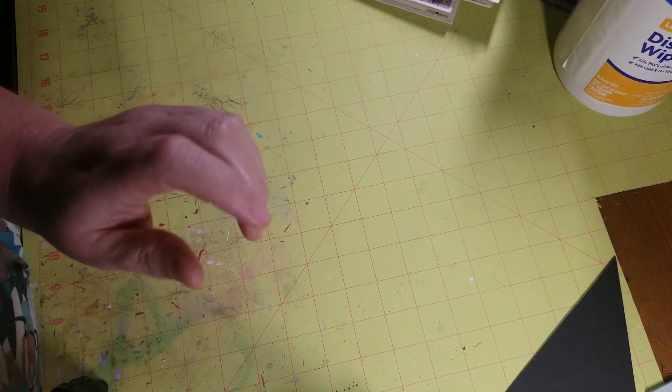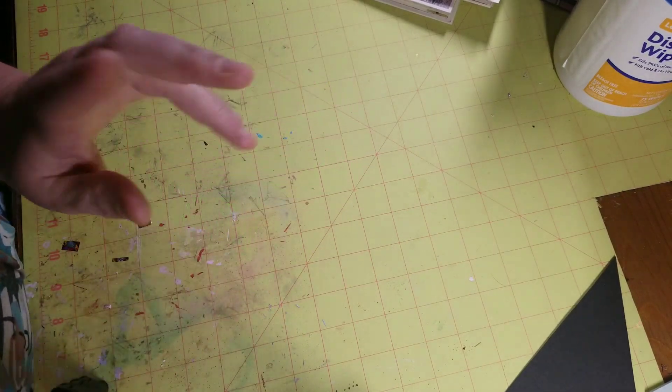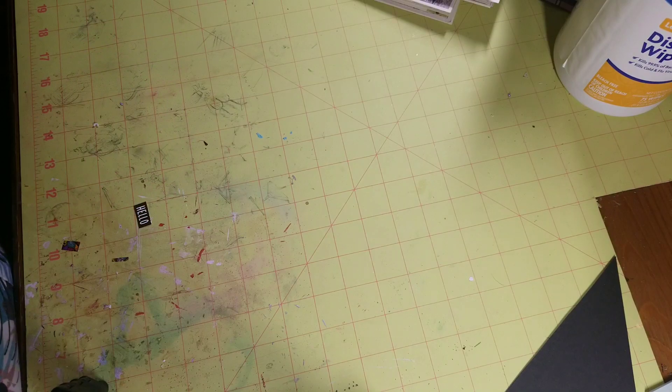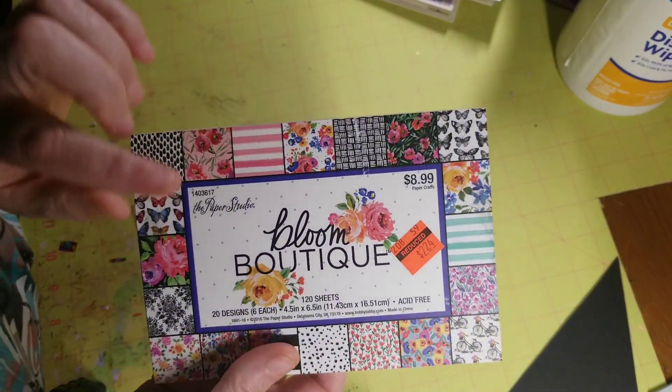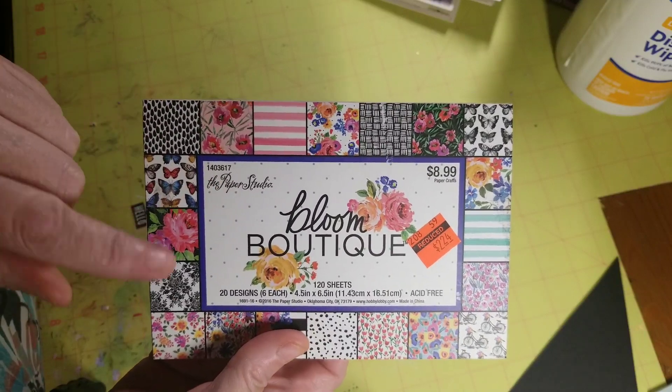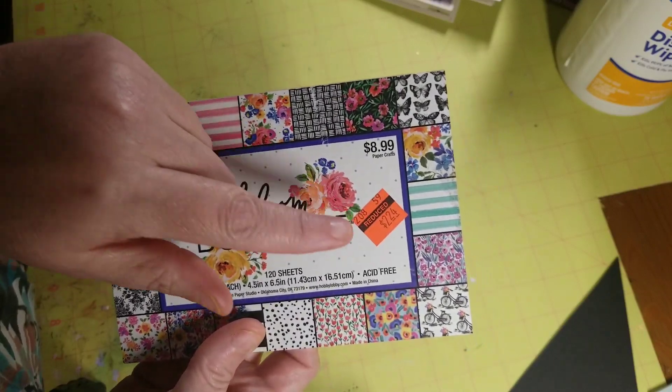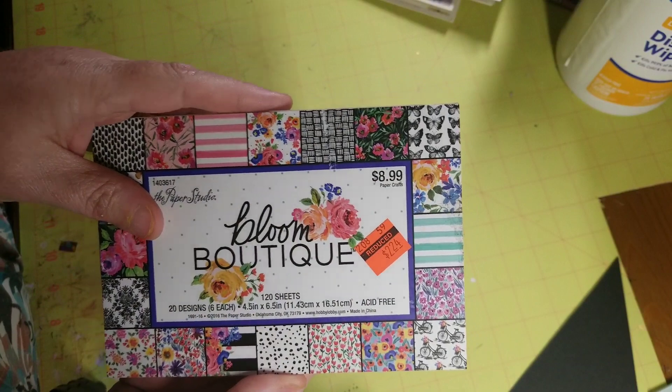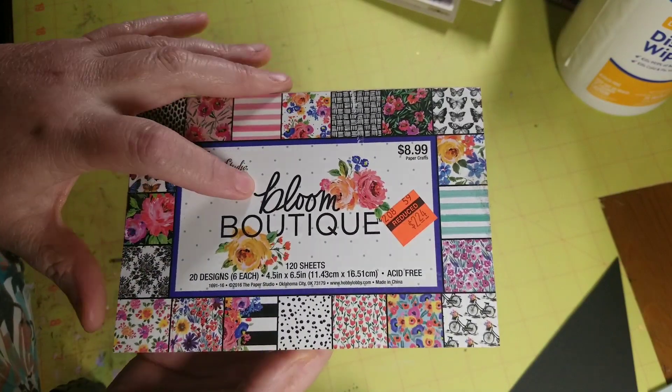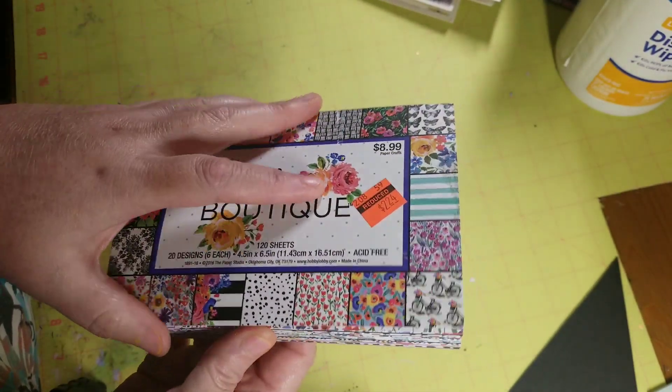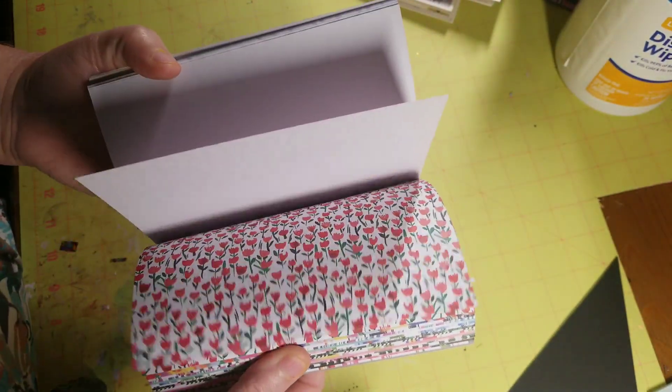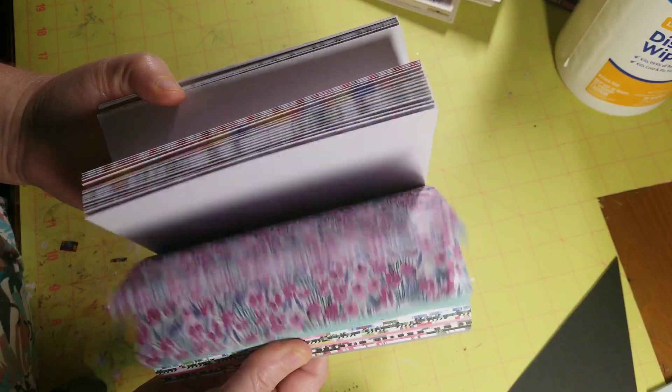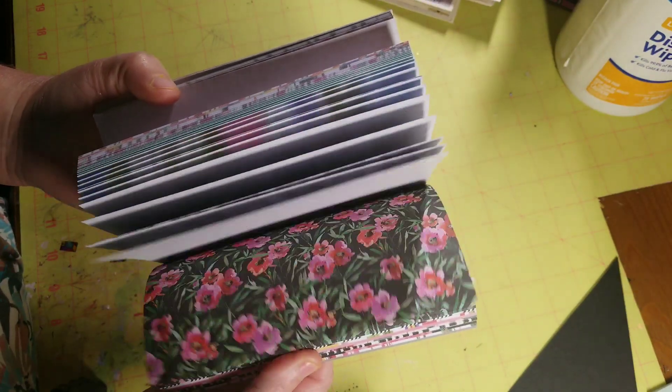Okay so that paper pad is totally smashed, there is nothing left. There was just little bitty scraps and I ended up throwing them away. So now I'm going to use this paper pad, it's called Bloom Boutique, it's by Paper Studio. I got it on clearance last year and it is really really pretty, it's all floral. And you can see I've already dug into it.